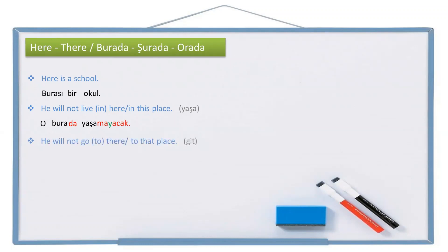Another example. He will not go there — he will not go to that place. He: o. To there — ora plus -a, but two vowels cannot be together, so we need a buffer letter: oraya. Go: git. Not go: gitme. Will not go — gitme plus -acak, again two vowels, so buffer letter: gitmeyecek. So: o oraya gitmeyecek.